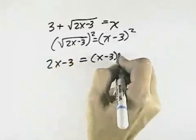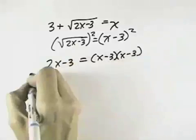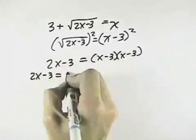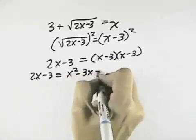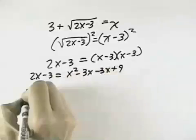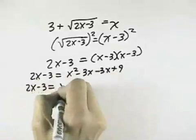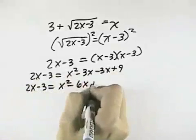On the right, we have to actually multiply x minus 3 times itself. So we have 2x minus 3 equals x squared minus 3x minus 3x plus 9, or 2x minus 3 equals x squared minus 6x plus 9.